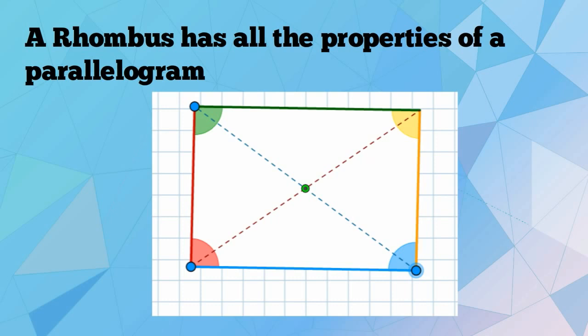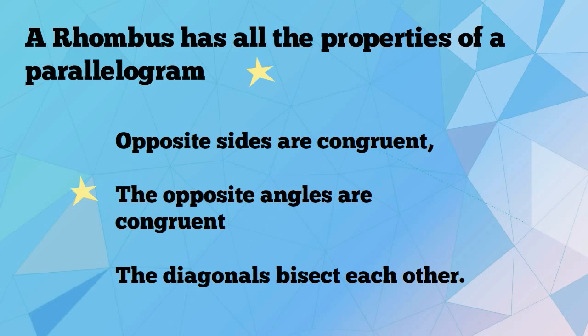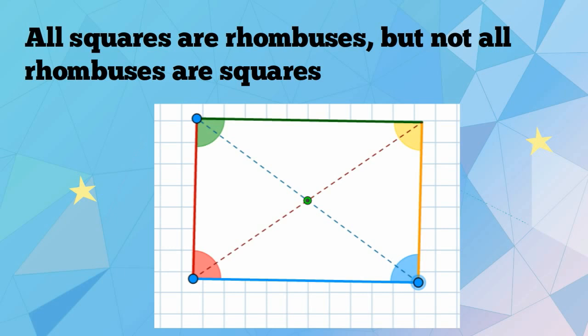The parallelogram properties include: opposite sides are congruent, the opposite angles are congruent, and the diagonals bisect each other. All squares can be considered a rhombus, but not all rhombuses are squares.